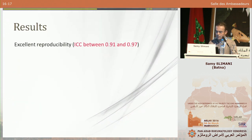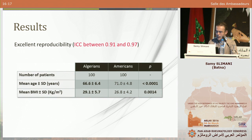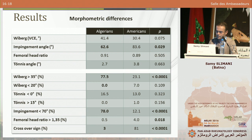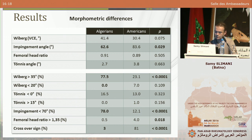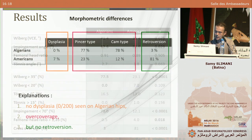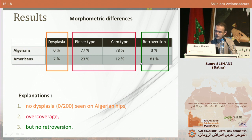We obtained excellent reproducibility with an ICC ranging between 0.91 and 0.97. Our populations were numerically identical, but our Algerian population was slightly younger, with a mean age of 66 years, and had a considerably higher BMI compared with the American cohort. This table presents the differences in means and proportions between our cohort and the original U.S. cohort; only statistically significant differences are shown.